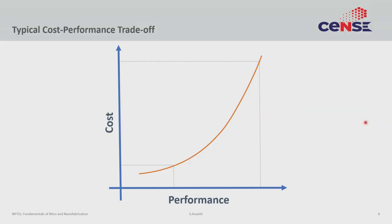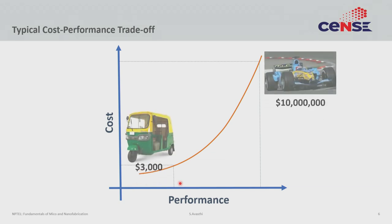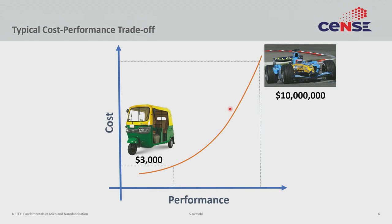Why should you care, both as a student but more interestingly as a consumer or taxpayer who funds research into micro and nanofabrication? Partly because there are a lot of benefits to be gained. Typically, if you take any system, it has a cost-performance trade-off. In order to get higher performance, you need higher cost. This curve is often not linear — if you want to upgrade cost and performance, cost typically scales much faster than performance. An auto is only worth $3,000 give or take, but an F1 car is upwards of $10 million. So the performance has not scaled by orders of magnitude, but the cost has.